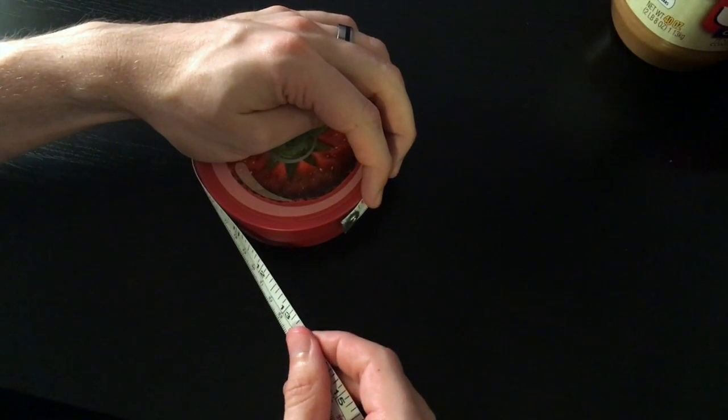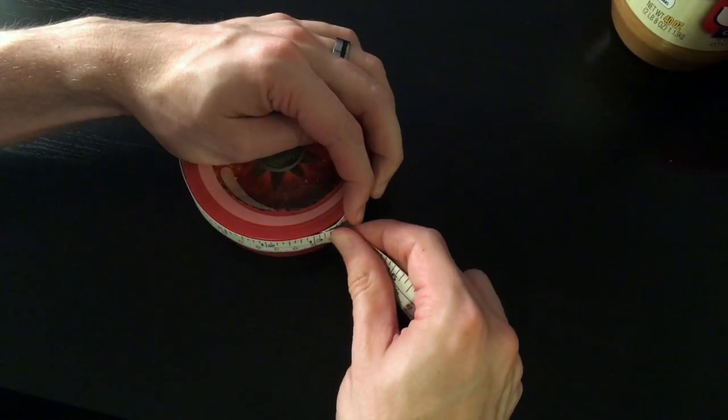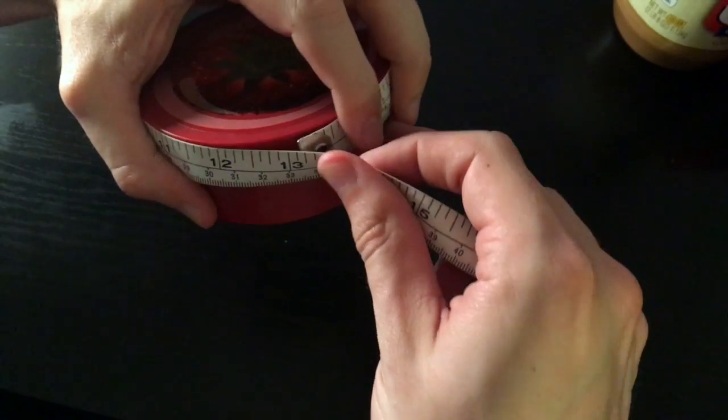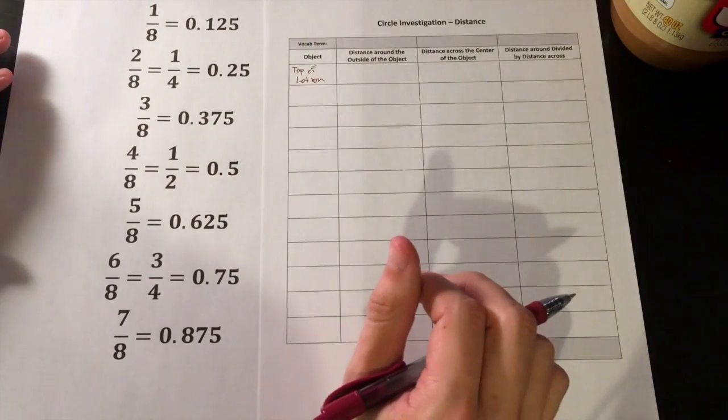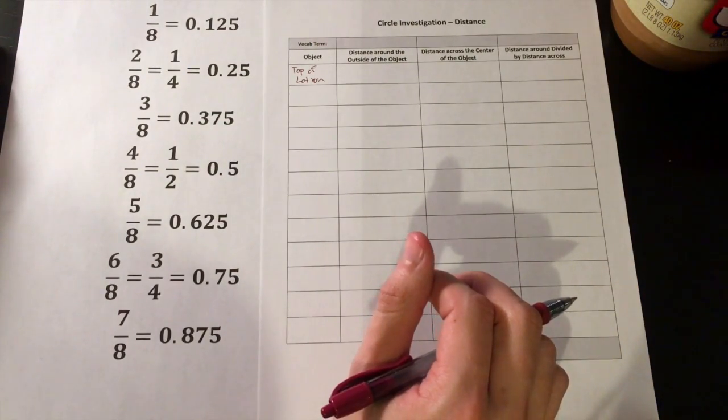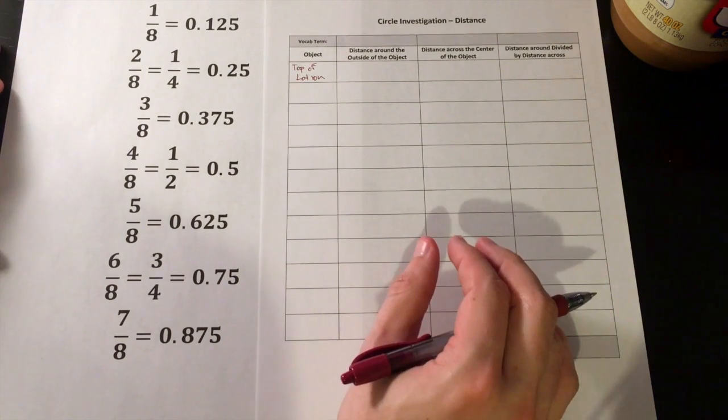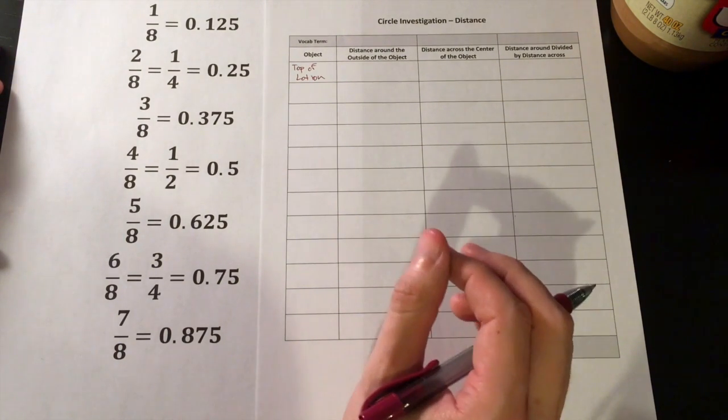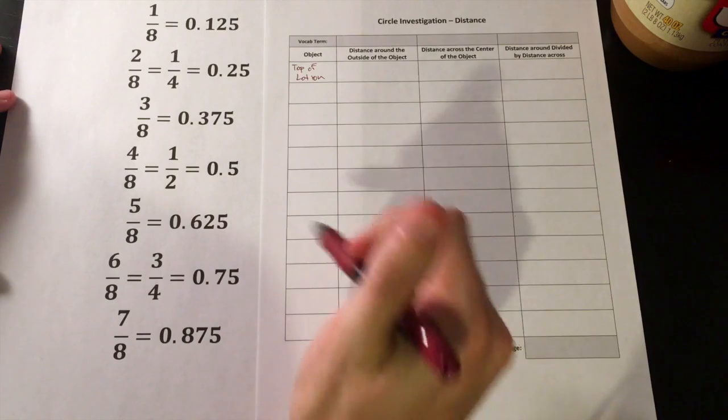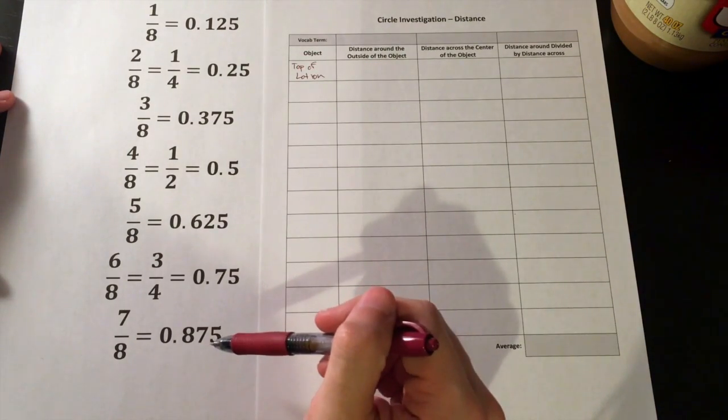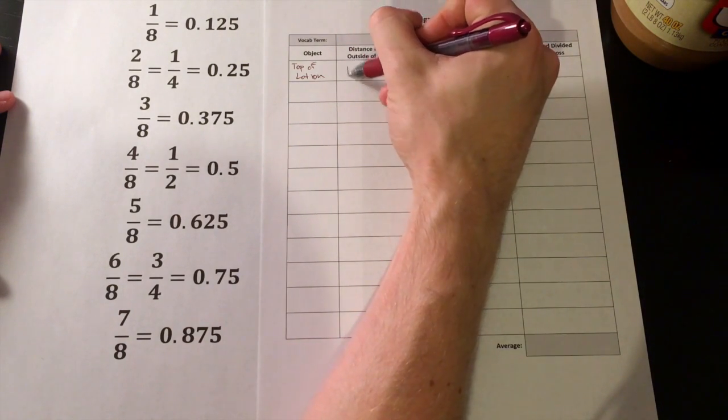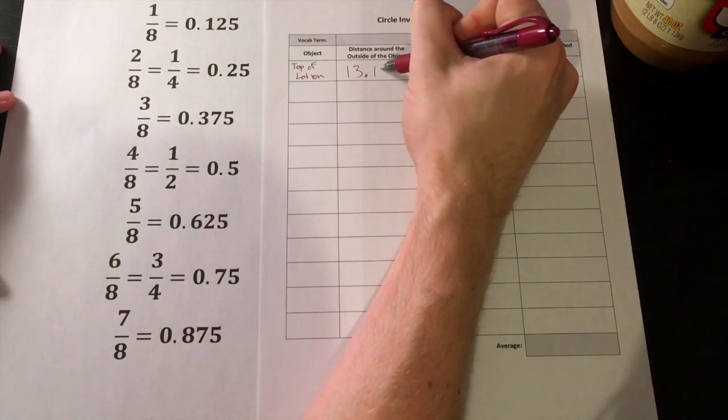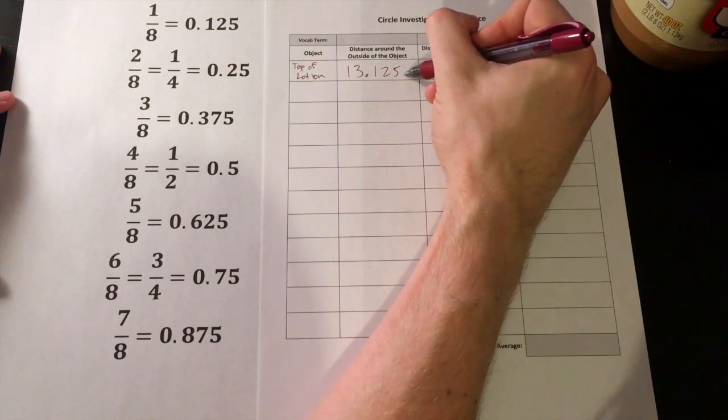Since I have a measuring tape, I'm going to use it. So I just wrap the measuring tape around the lid, and I can see that it comes to 13 and 1/8. So on my data table, I'm going to record 13 and 1/8, but instead of just writing 1/8, I'm going to record 1/8 as a decimal. So here I've made a list of the increments of 1/8 and their decimal equivalents, so I can just write 13 and 1/8 as 13.125, and this is inches.